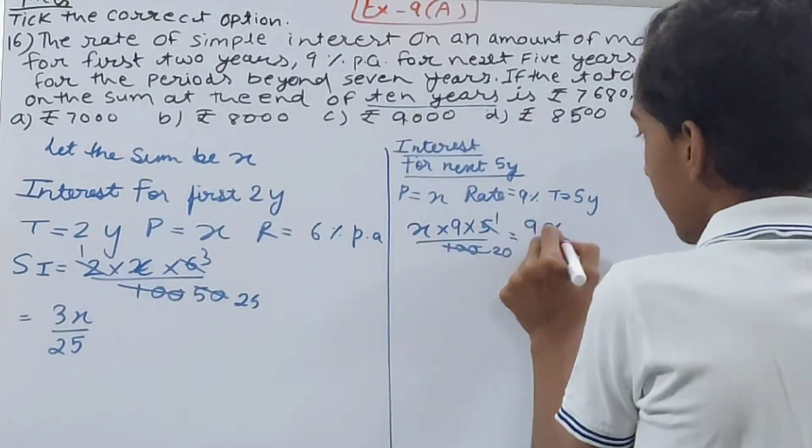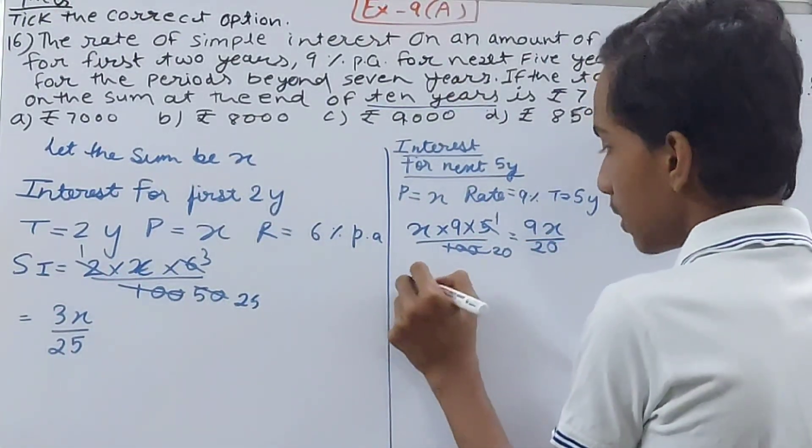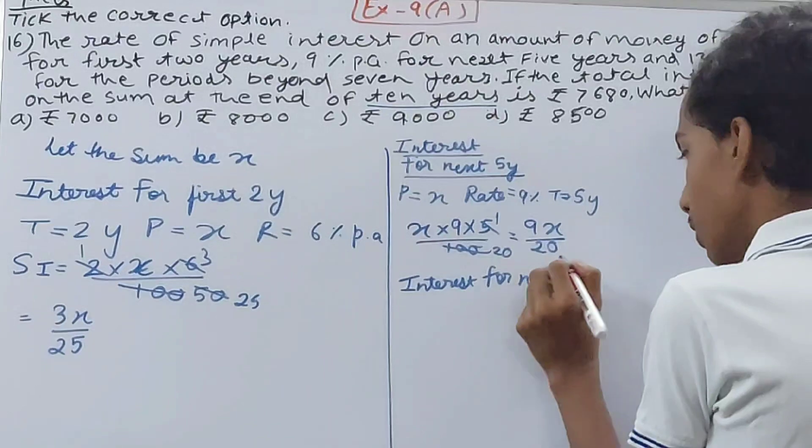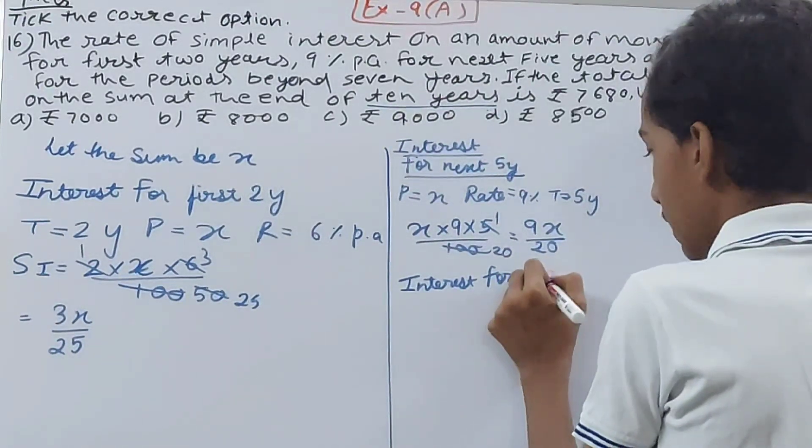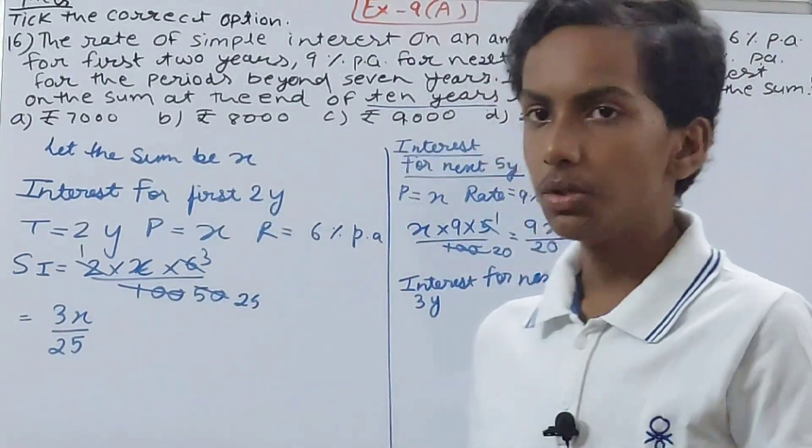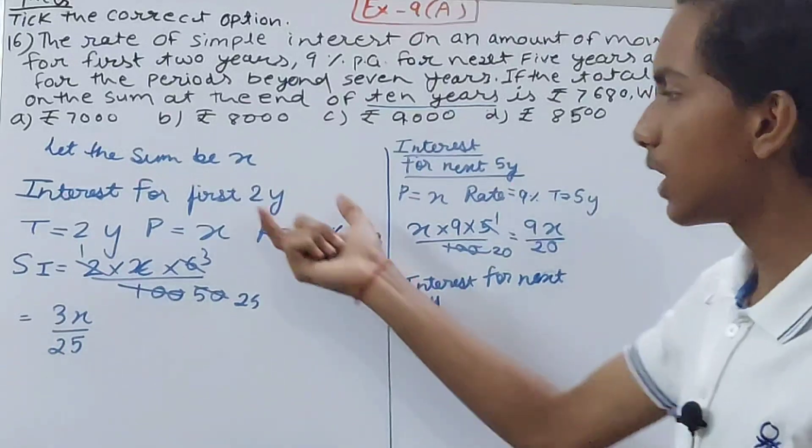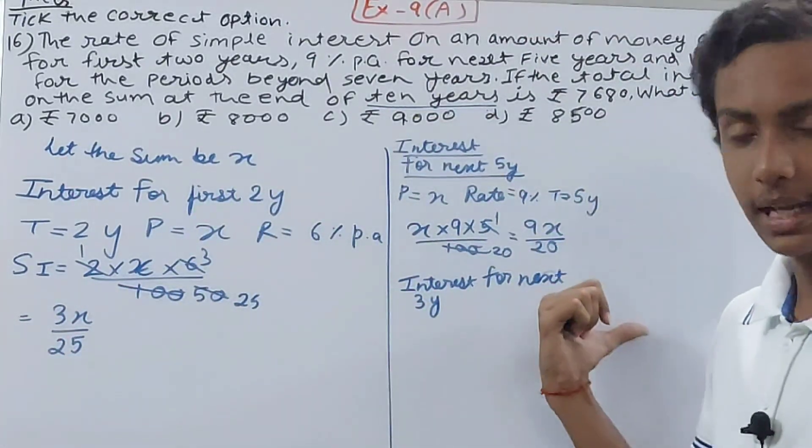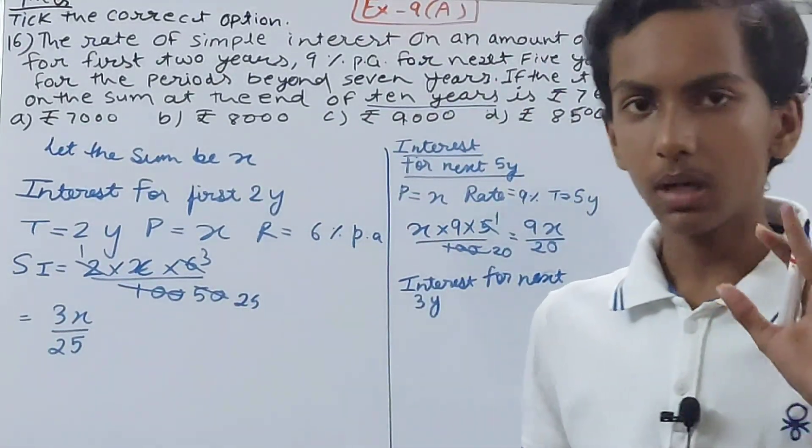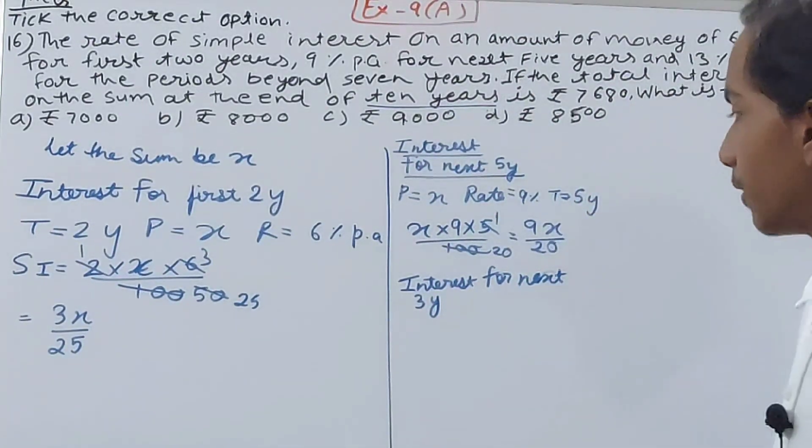Now the interest for next, how many years? You have to see that interest for the next will be calculated for the next three years. Why three years? Because the sum at the end of 10 years, the interest is given. So out of those 10 years, we have already calculated for two years and the next five years. Two plus five is seven. Seven years already we have calculated. How many years are left? 10 minus 7, that is three years.